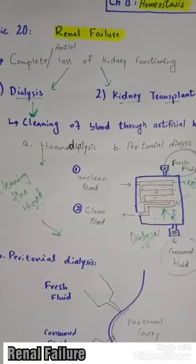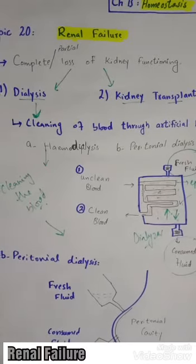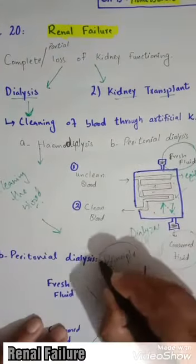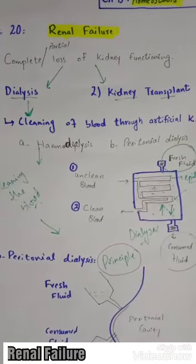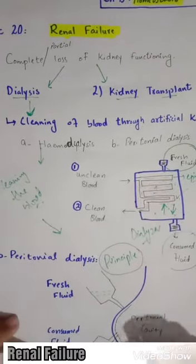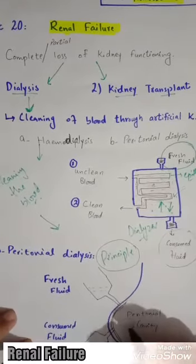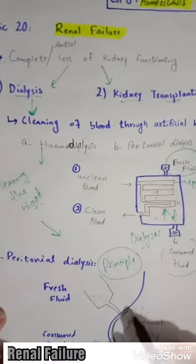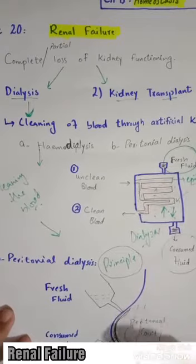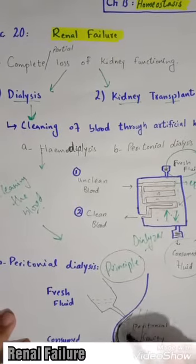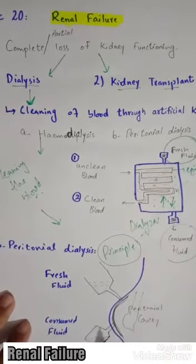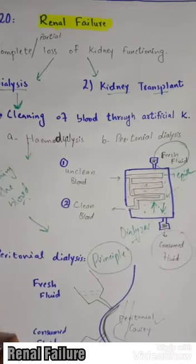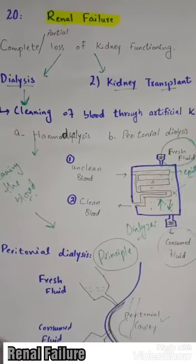The second type is peritoneal dialysis. Peritoneal dialysis works on the same principle as hemodialysis. In this case, the peritoneum — which is a cavity around the belly — is used. This cavity is present around the stomach in the belly region, and the membrane surrounding it is known as the peritoneum.